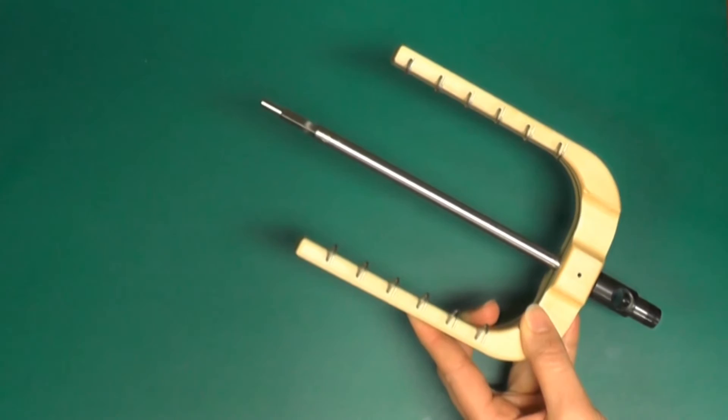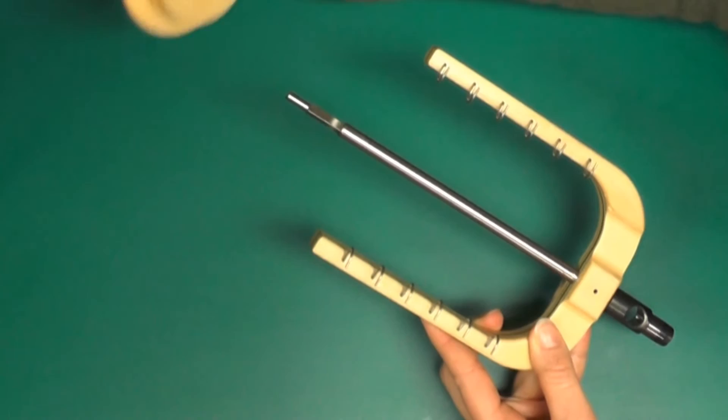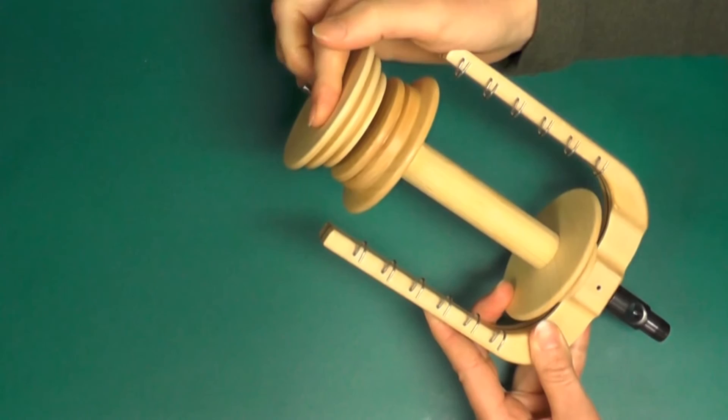If you are using double drive, the small flange goes closest to the whorl. For scotch tension, put the large flange of the bobbin closest to the whorl. Slide the whorl on and oil the tips of the flyer.